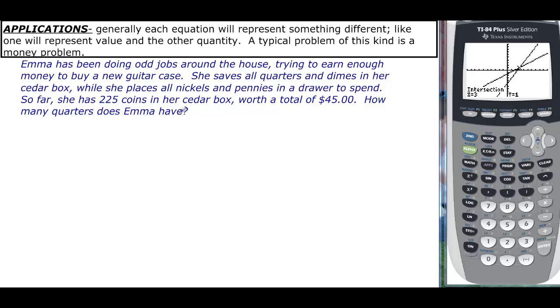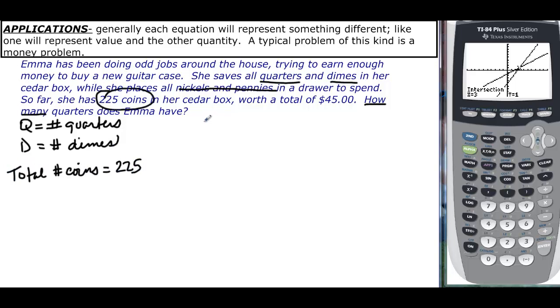How many quarters does Emma have? We don't really care about nickels and pennies because she's going to spend those, but we do care about quarters and dimes. That means when we represent our variables, it's the number of quarters she has—I'll call that Q—and if she's also got dimes, I'll call that D. The total number of coins that she has is 225, so we could set up an equation that says dimes plus quarters equals 225.